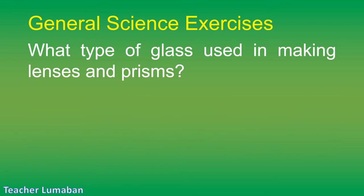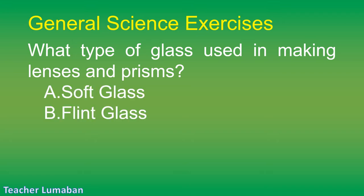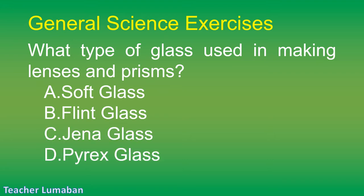What type of glass is used in making lenses and prisms? Letter A: soft glass. Letter B: flint glass. Letter C: Jena glass. Letter D: Pyrex glass.